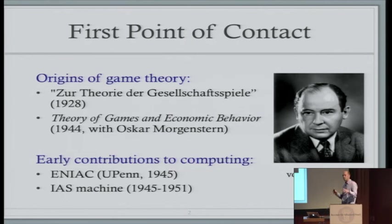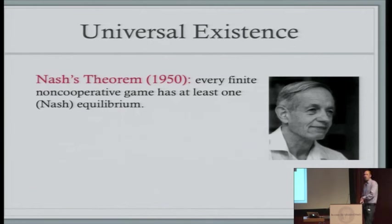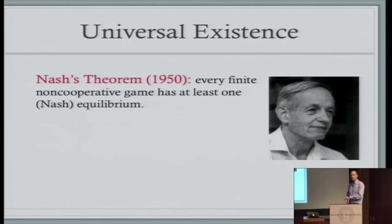I want to contrast that with the 21st century, where there's been a very lively and useful conversation between those two fields. Before I fast forward, I want to point out one revolutionary idea from each community in the 20th century. On the economics side, we have Nash's theorem. In the von Neumann and Morgenstern book in '44, they focused on two-player zero-sum games, but Nash really founded non-cooperative game theory where any number of players each act as individuals in their own self-interest.